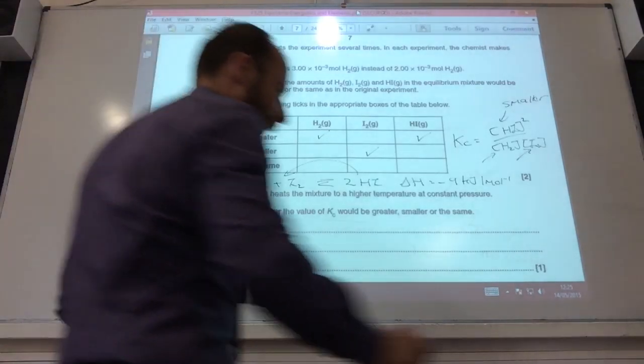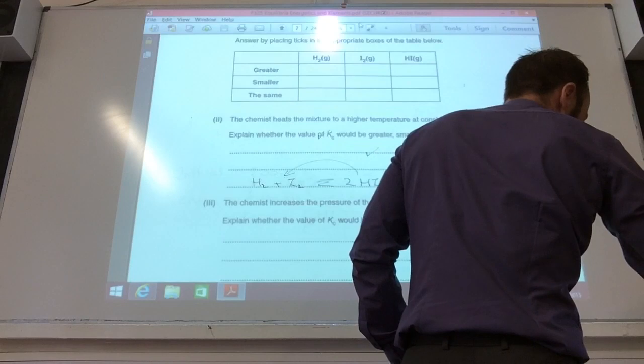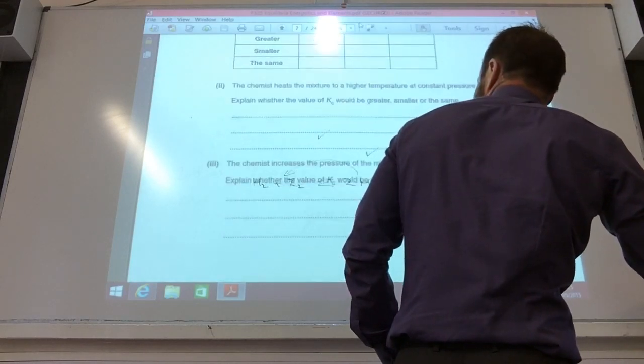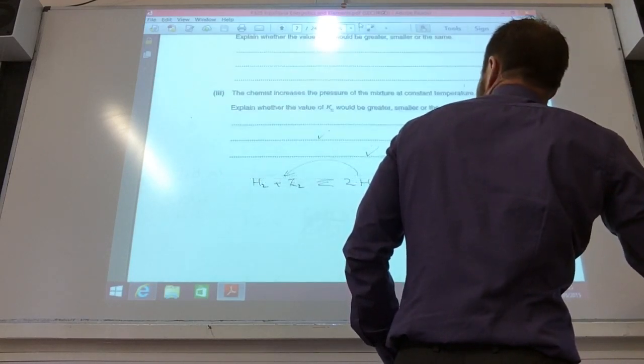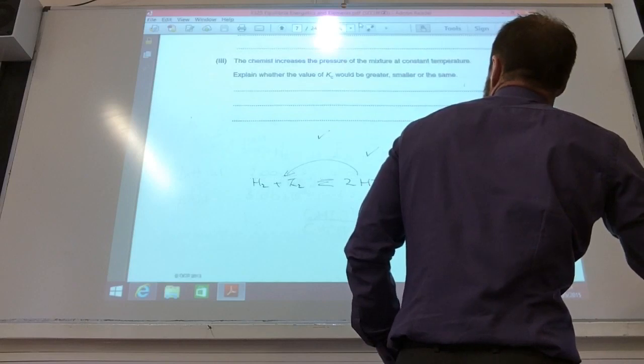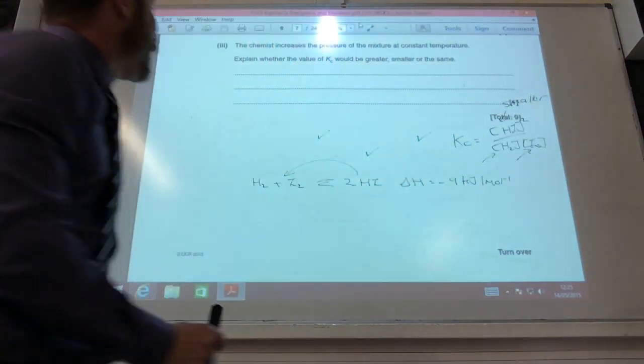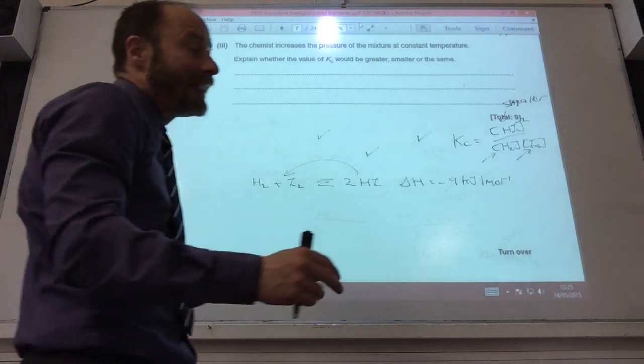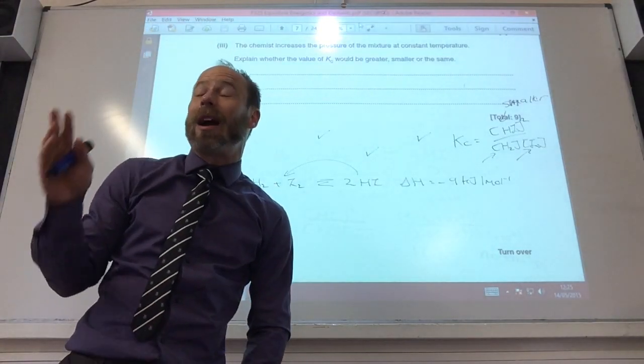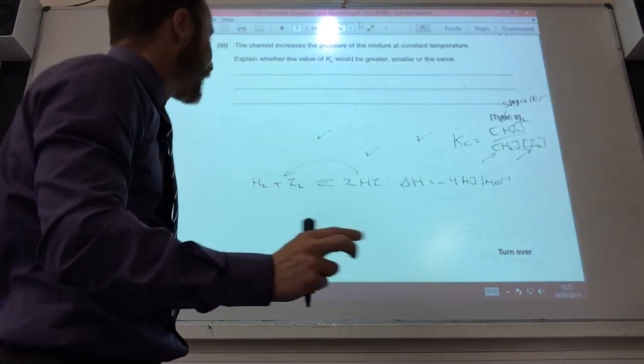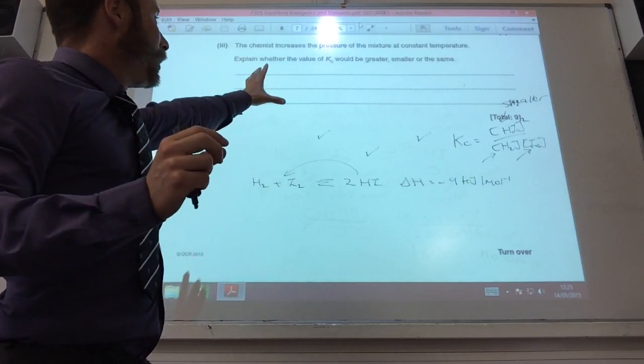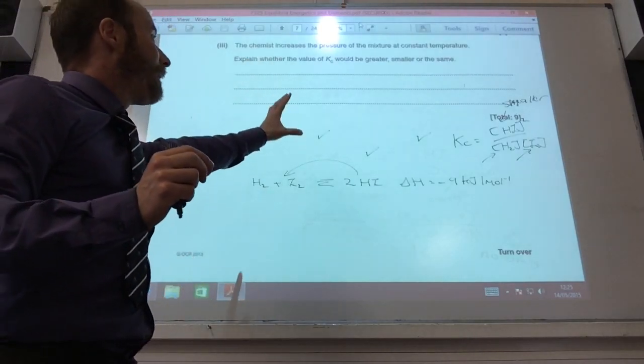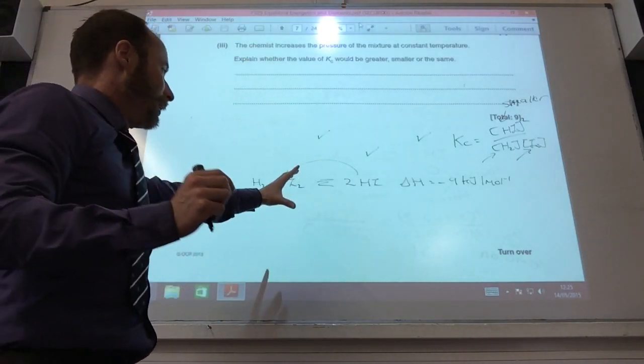And then, finally, the chemist increases the pressure of the mixture. What will happen to Kc? Kc will stay the same. Kc is always the same. It doesn't matter. Kc only changes with temperature. So, the key thing, Kc will be the same because it is not affected by pressure.